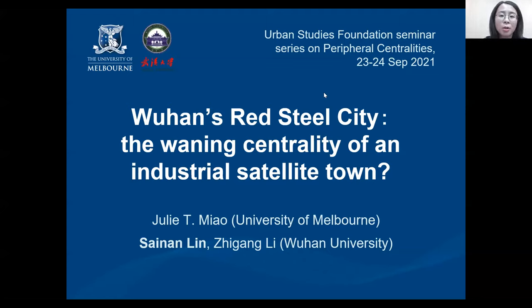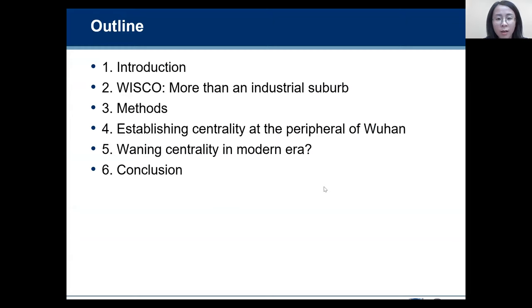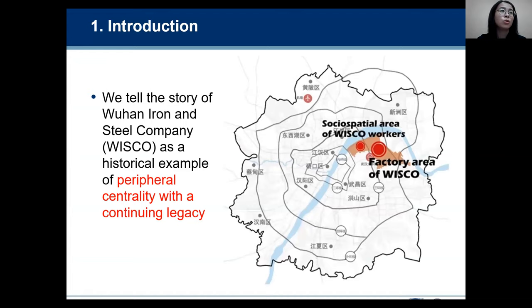My name is Sena Ling from Wuhan University. The topic today is Wuhan's Red Steel City, the winning centrality of an industrial satellite town. This is a work collaborated with Julie Miao and Zhigang Li. For this research, we tell the story of Wuhan Iron and Steel Company, which we call Wisco, as a historical example of peripheral centrality with a continuing legacy.